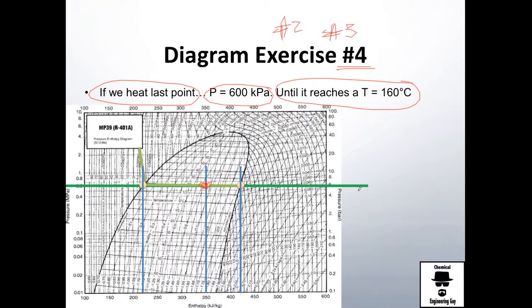So once again this is the isobaric line because we are working with the same pressure. We're going to have a change of temperature, so the only way we are able to change the temperature is by making it a vapor and then heating it.